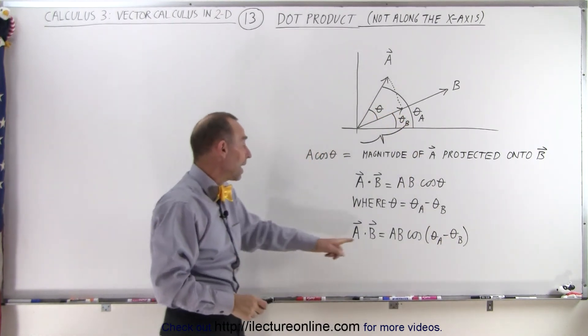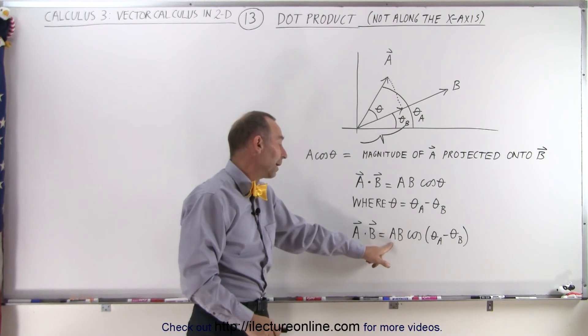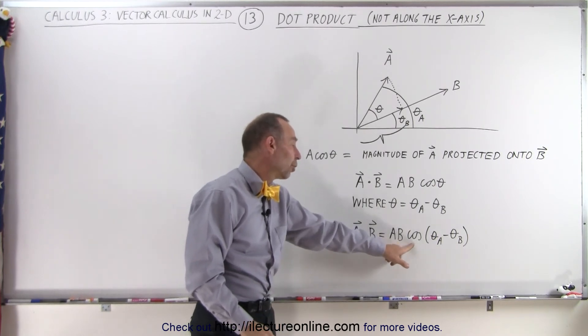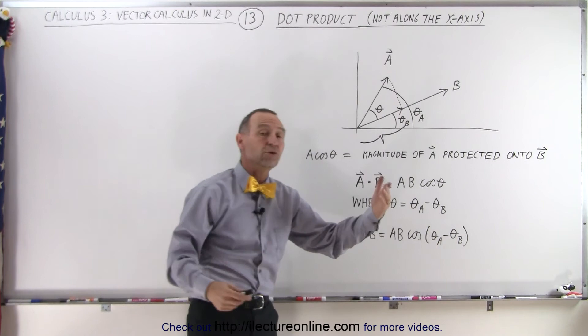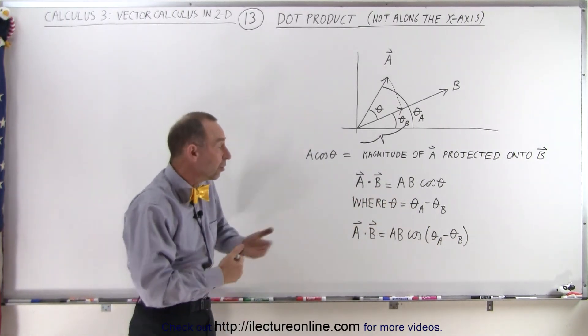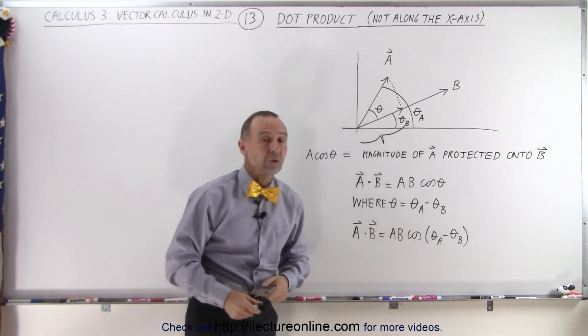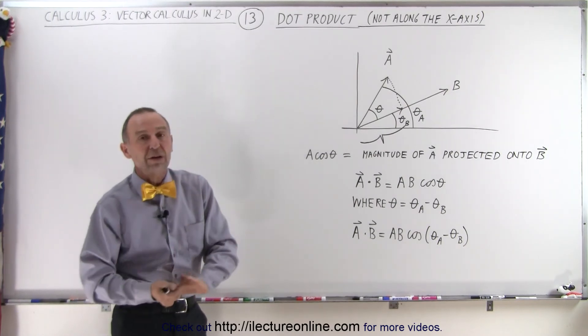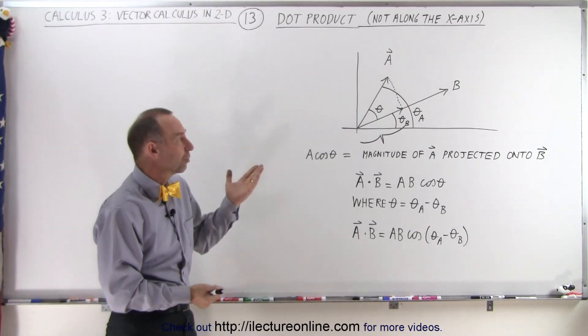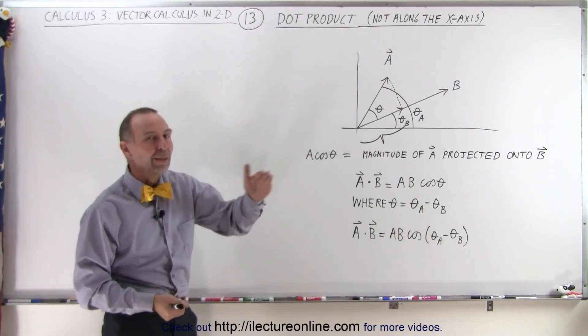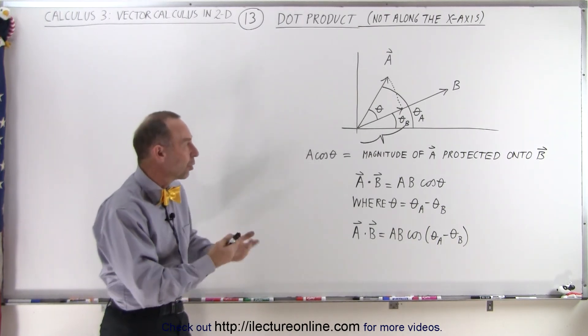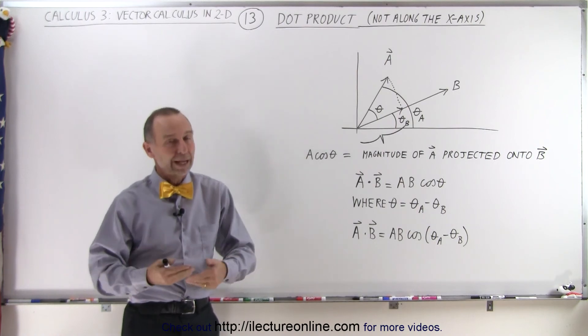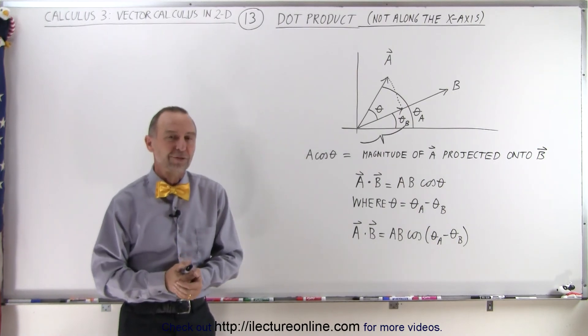Then you could say that A dot B is equal to the magnitude of A times the magnitude of B times the cosine of the difference between those two angles relative to the x-axis, or simply AB times the cosine of theta. So there's really no difference at all. No matter which direction the two vectors point, it's always going to be the magnitude of the one times the magnitude of the other times the cosine of the angle between them. And that's what we mean by the dot product of two vectors.